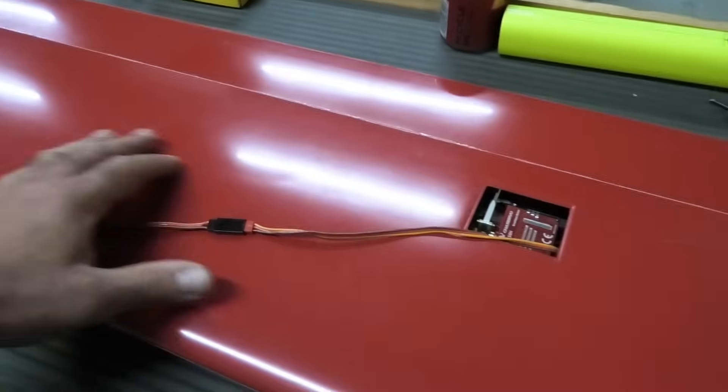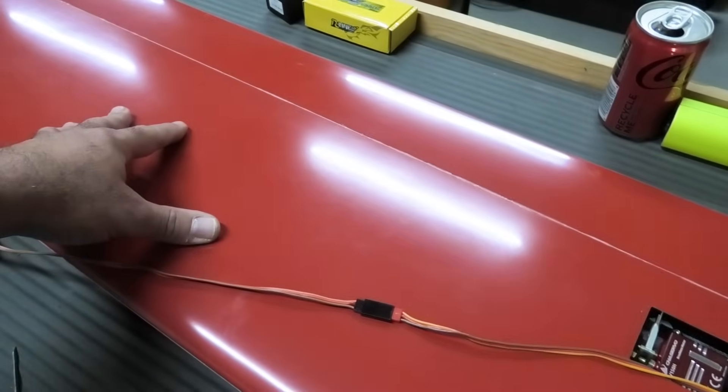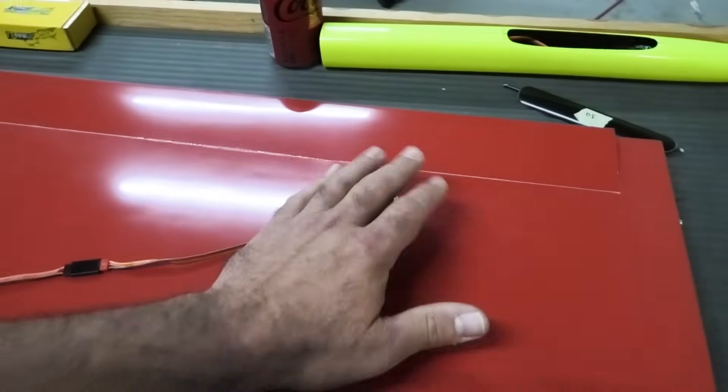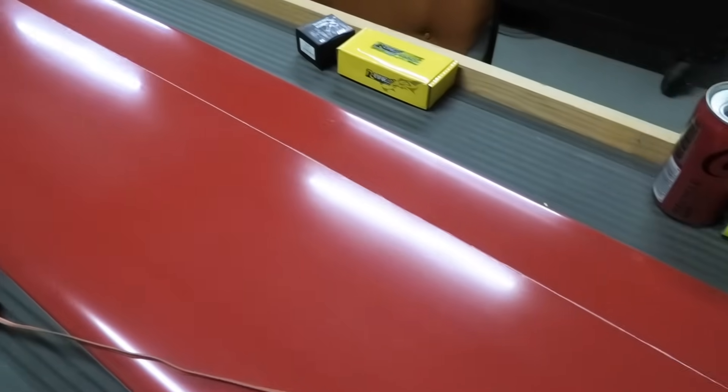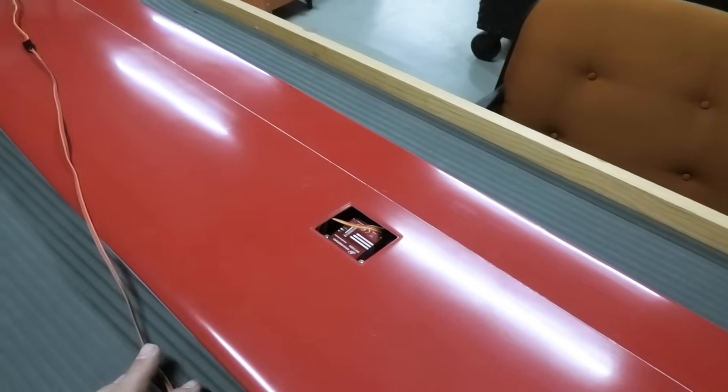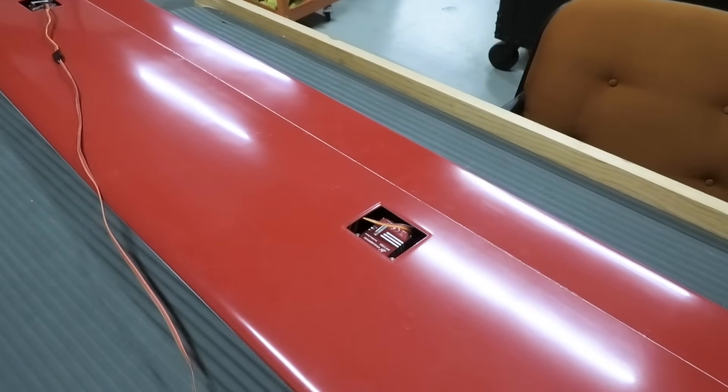That basically wraps up all the servo installation in all of the wing panels. We'll save the wiring and the covers till later. That was the flap servo install on this ASH-30.